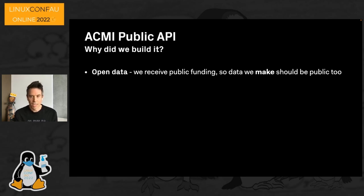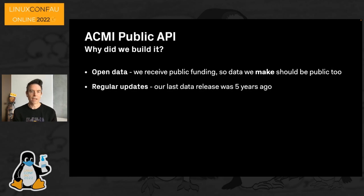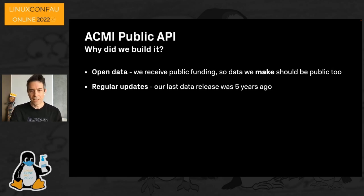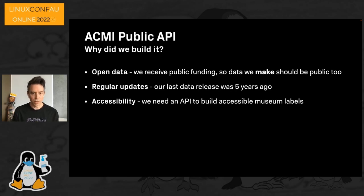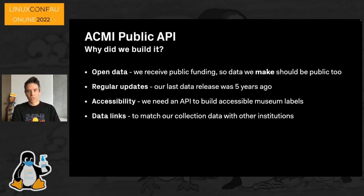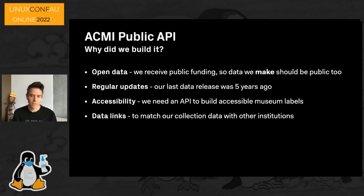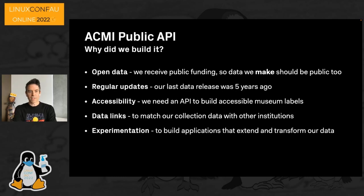Another reason we wanted to build it is for regular updates. Our last data release was five years ago and we'd really like to release more frequently — nightly if possible. We wanted to build for accessibility, so the public labels API will let visitors translate and read all labels at ACMI using their own screen readers. We also wanted to create richer data links to match collections data with other institutions, such as IDs from the DFF in Germany or data sources like Wikidata, and we love experimentation — building applications that extend and transform our data.